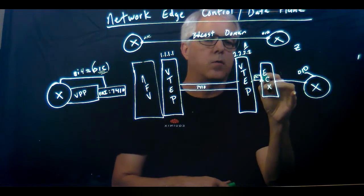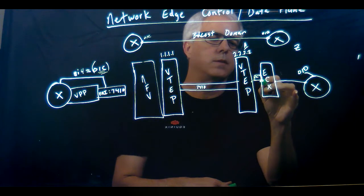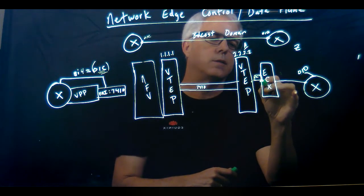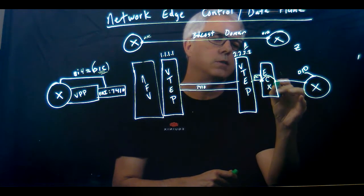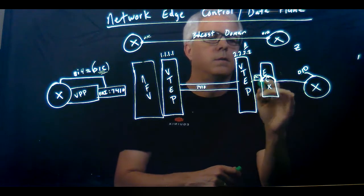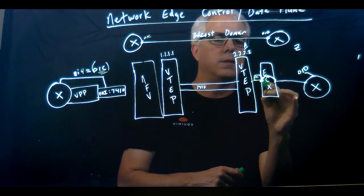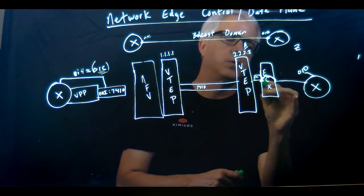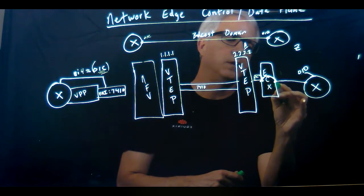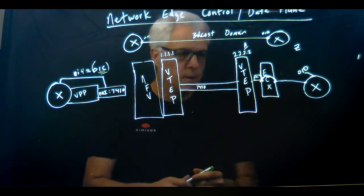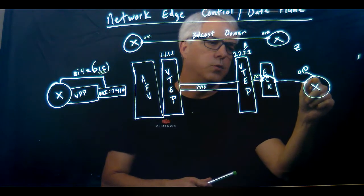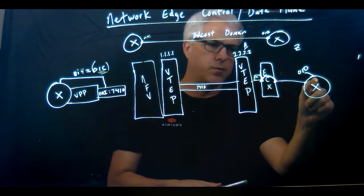The way we do that is a thing called a route instance. A route instance is something that gets built dynamically when you build a connection, and the route instance is stitched across the ECX switch. So now this route instance is going to take the 01C MAC address and put it on the other side of the ECX switch, which is connected to the respective cloud provider's infrastructure.